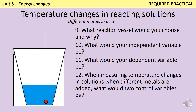These next questions are all about the required practical, and there are many different reactions you can do for this required practical. For instance, you can add different samples of metals to acids or to copper sulfate. You could add the same metal every time and change the mass. For the purposes of these questions, I've assumed that we're adding different metals to some acid.